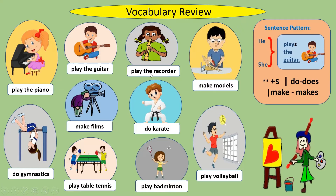Number three, 'play the recorder.' Can you play the recorder? Number four, 'make models.' He makes airplane models. Number five, 'make films.' This old man makes films. Number six, 'do karate.' He does karate every Monday.